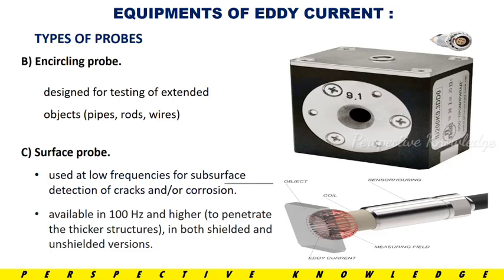Second, the Encircling Probe. This is designed for testing external objects such as pipes, rods, and wires. We pass the object through the probe and test its Eddy Current properties. Third, the Surface Probe, used at low frequencies for subsurface detection of cracks or corrosion. It is available in both shielded and unshielded versions.